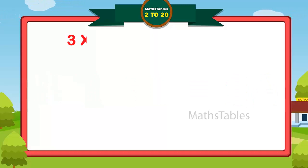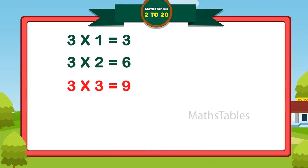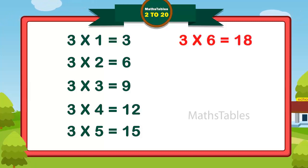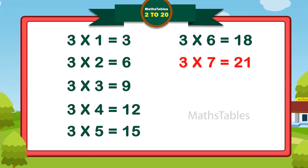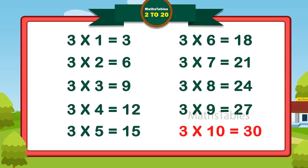3 ones are 3. 3 twos are 6. 3 threes are 9. 3 fours are 12. 3 fives are 15. 3 sixes are 18. 3 sevens are 21. 3 eights are 24. 3 nines are 27. 3 tens are 30.